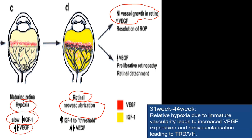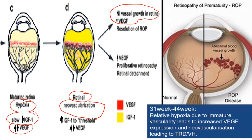These new vessels have very weak walls and can bleed, leading to vitreous hemorrhage. They can also cause traction on the retina, resulting in tractional retinal detachment. These new vessels develop at the junction of the vascular and avascular retina, and these complications will be discussed further in subsequent lectures on the signs of retinopathy of prematurity.